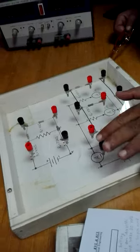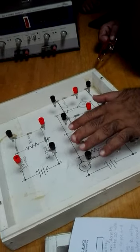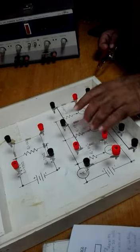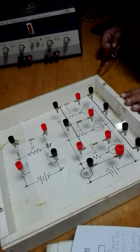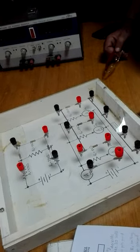The current coming out from the source is in series, entering towards the node. From here, the currents are leaving from the node, the branch currents. The sum of three is total.